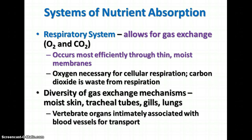Another system of nutrient absorption is the respiratory system, because nutrients also include gases like oxygen and carbon dioxide. The respiratory system allows for gas exchange. Gas exchange occurs most efficiently through thin, moist membranes, so whatever method an animal uses for respiration will involve thin, moist membranes. Oxygen is needed in cells for cellular respiration, and carbon dioxide is a waste product that must be removed. Some animals depend on diffusion through their skin, while others have tracheal tubes, gills, or lungs.